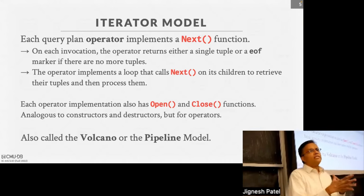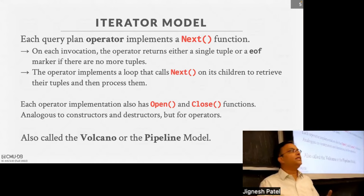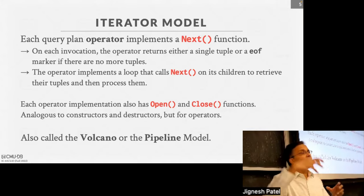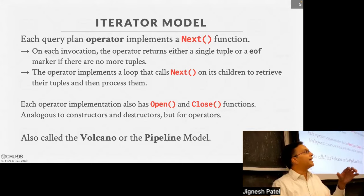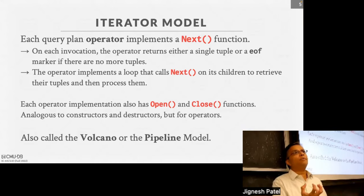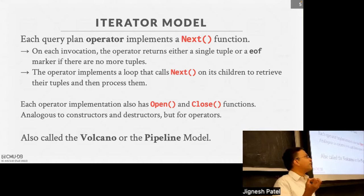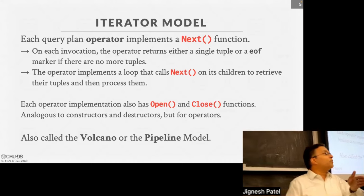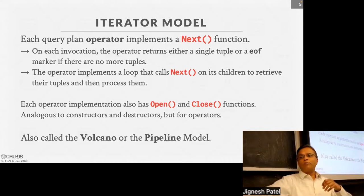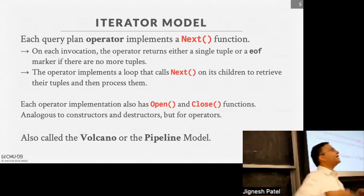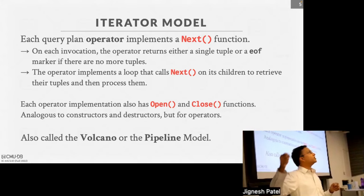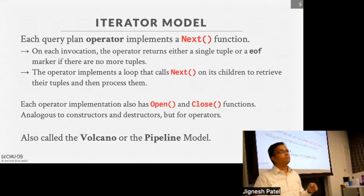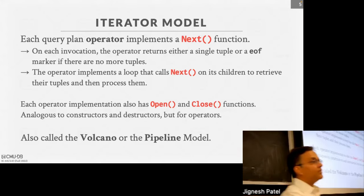You can think of this just like iterators in C++ and other languages — you're iterating over records being produced. You don't know where the start and end is; that depends on the semantics of the operator. You keep calling next, and if you're consuming from an operator, you call next until it returns an end-of-file indicating it's done processing. That's your end-of-iterator marker. Open and close are just to set up and tear down.